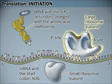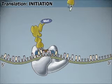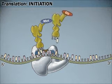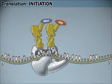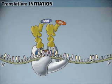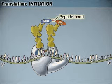Then the large ribosomal subunit joins. The second charged tRNA joins this complex, binding the appropriate codon. A peptide linkage forms between the two amino acids and the first tRNA is released.